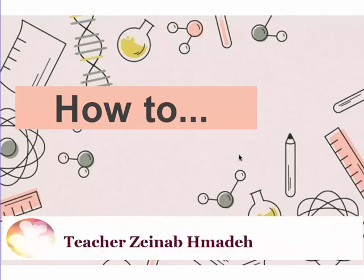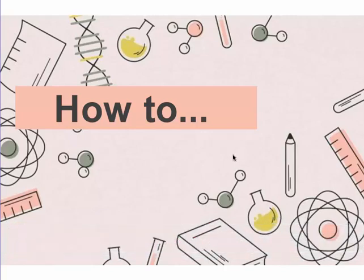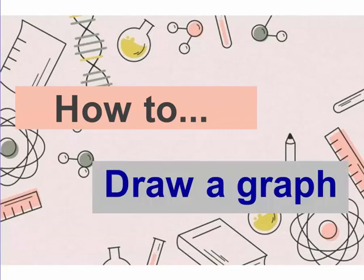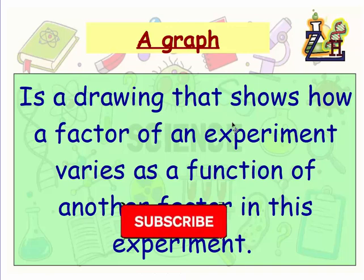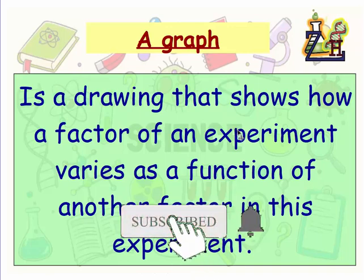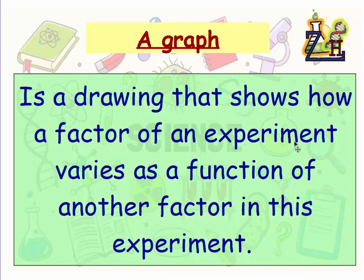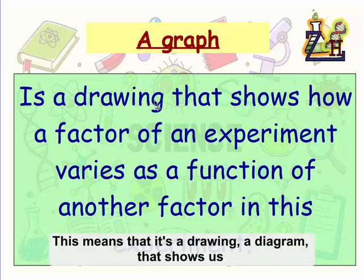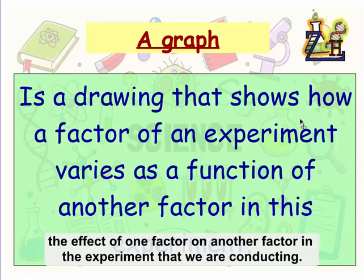Welcome to a new video of the 'How To' action verb series. Today we're going to learn how to draw a graph. A graph is a drawing that shows how a factor of an experiment varies as a function of another factor. It can explain or show the result of the experiment, and by viewing it we can study how the measured factor changed as a function of the manipulated factor.